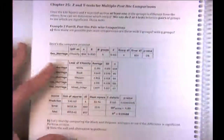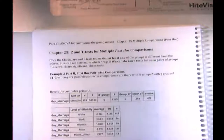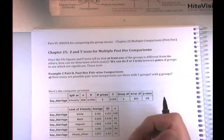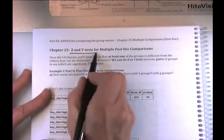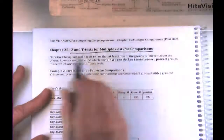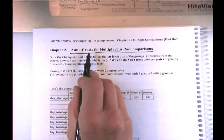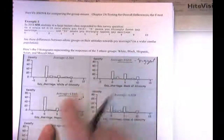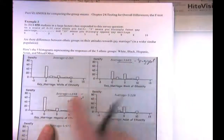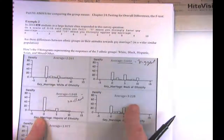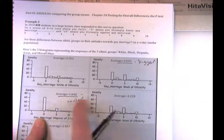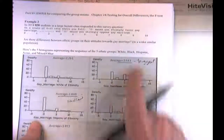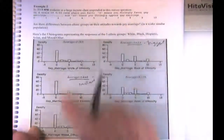Now we're going to look at pairwise differences using Z and T tests. For example, blacks had the highest average and Hispanics had the lowest, so we might want to test if that difference is significant. We could also compare Asians versus Hispanics, and many other pairs. With five groups, how many pairwise comparisons can we make?